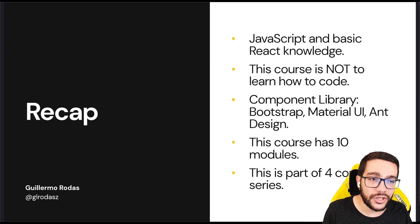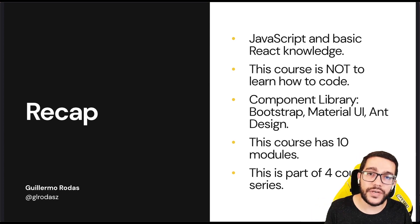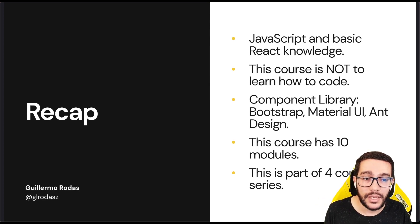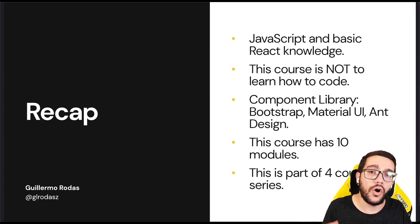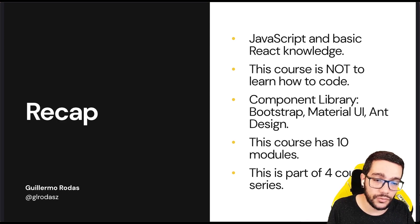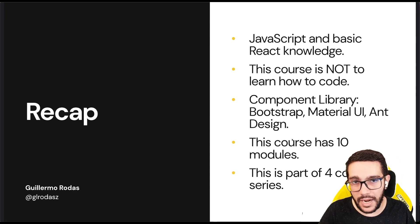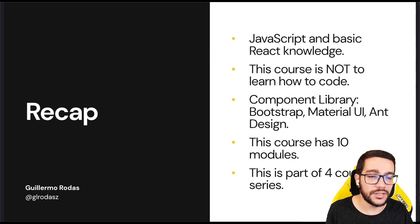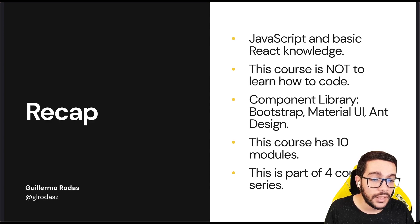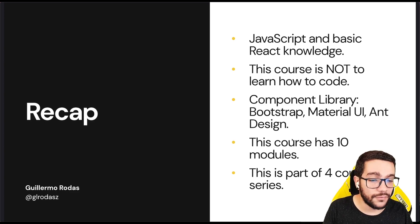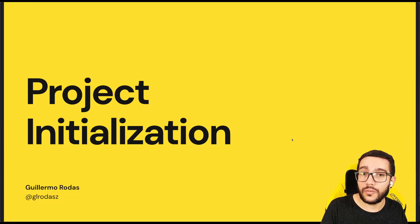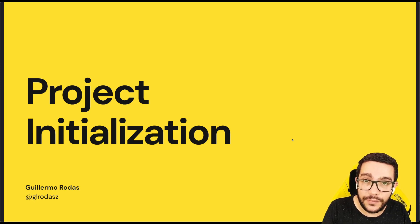So in this introductory lesson, we just covered what the requirements are — remember, JavaScript and basic React knowledge is what you need. This is not about learning how to code, though sometimes I will go deep into some basic concepts. Remember, a component library includes tools like Bootstrap, Material UI, and Ant Design. This course is made of 10 modules, each with multiple lessons, and it's just one part of four courses. In our next lesson, we are going to start with the project initialization — I will show you how I usually start a project. See you in the next one.